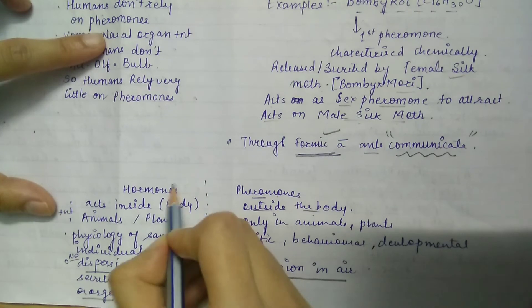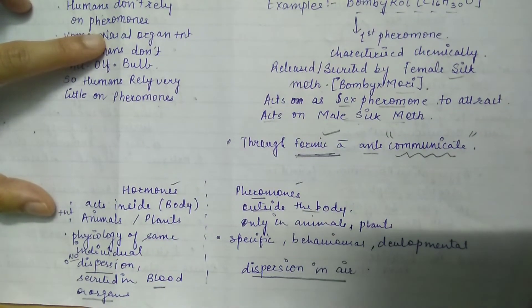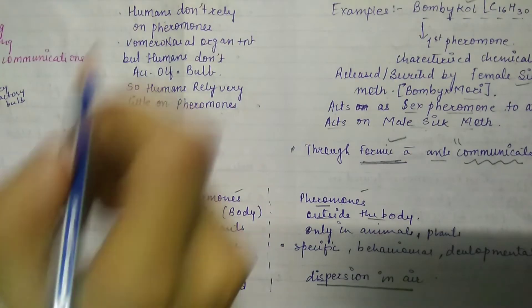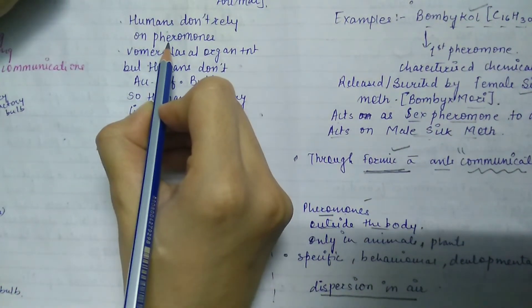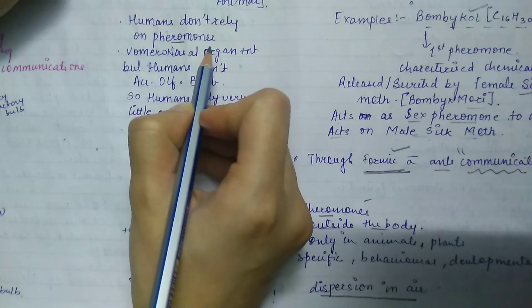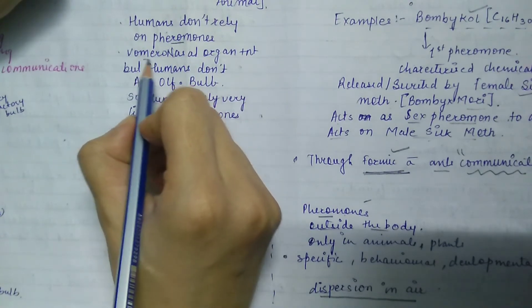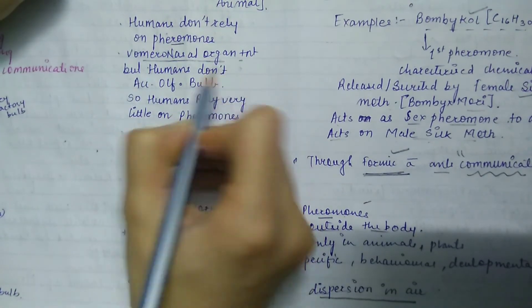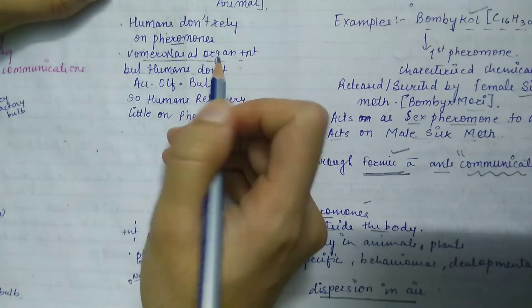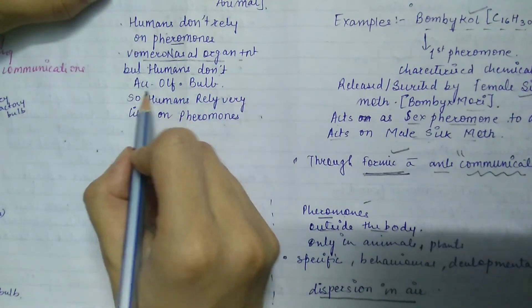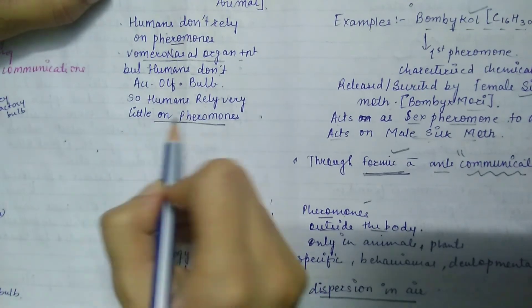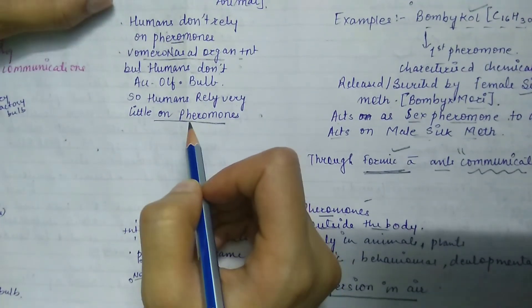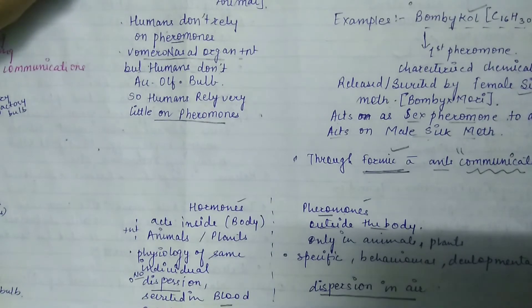Pheromones are dispersed in air, while hormones are secreted in blood and organs. I have noted another important thing: humans don't rely on pheromones. The vomeronasal organ is present, but humans rely on olfactory bulbs. So humans rely very little on pheromones.